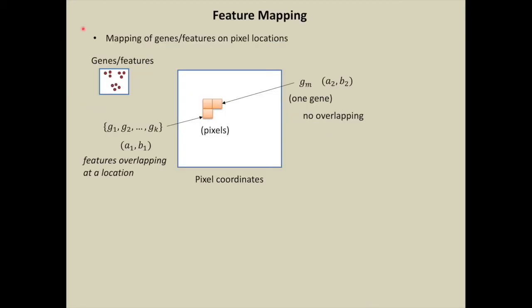Let us see the allocation of genes or features on pixel locations. If k genes would have the same pixel location, they will be mapped to the location a1, b1. That is, overlapping of k genes at a location.